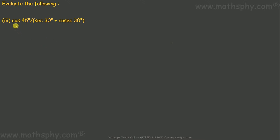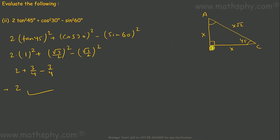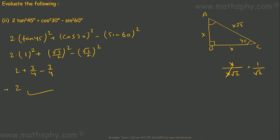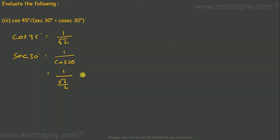For this equation, cos 45 is adjacent over hypotenuse, which is x over x root 2, giving us 1 over root 2. Now, 1 over sec 30 degrees equals 1 over (1 over cos 30). Cos 30 is root 3 over 2, so sec 30 equals 2 over root 3.